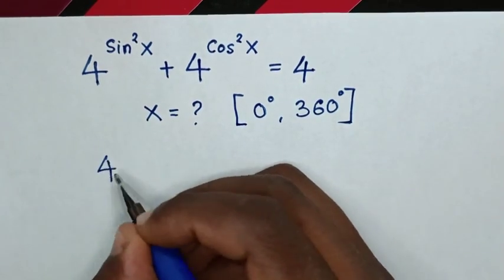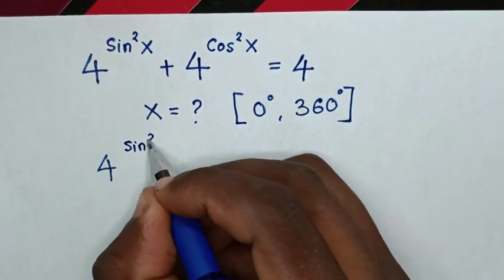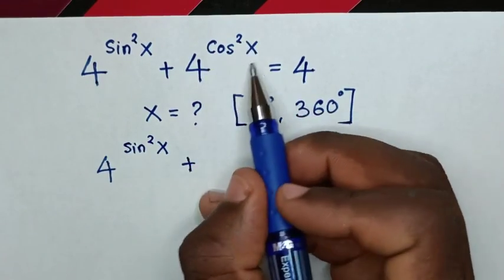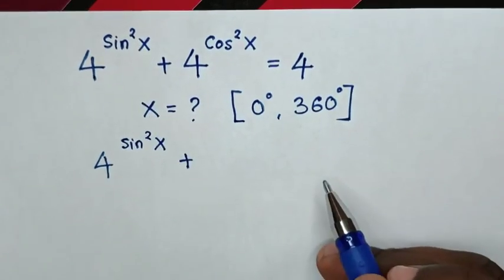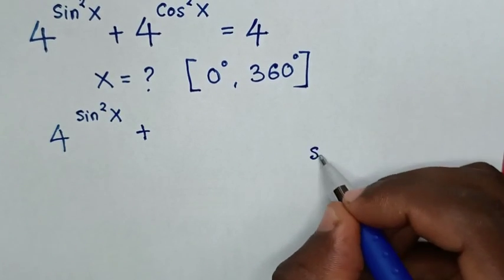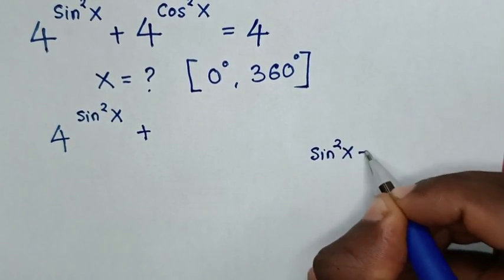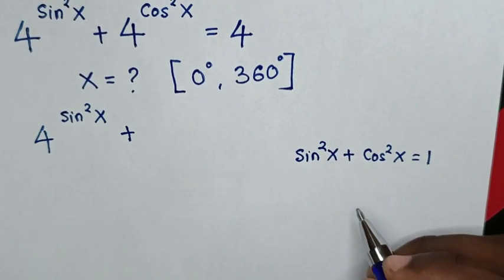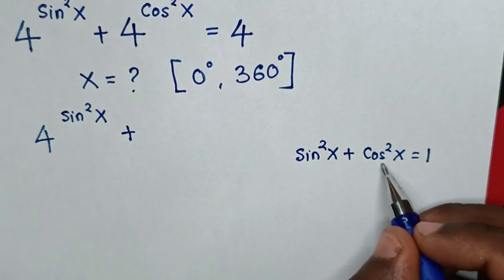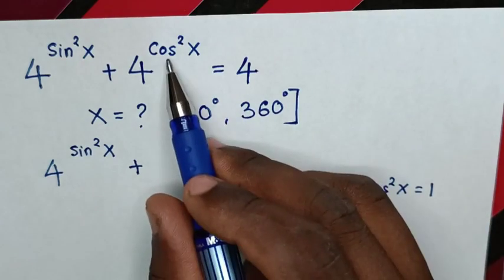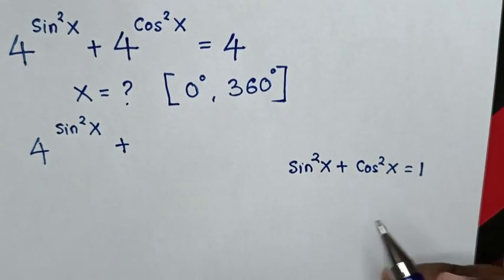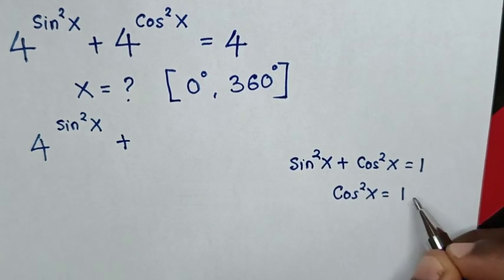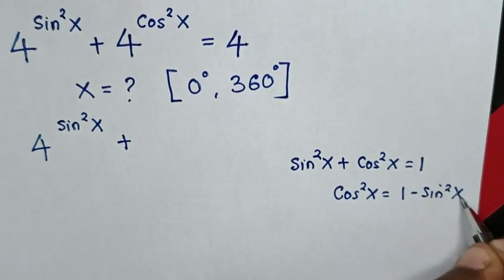From this equation, 4 power of sine squared x plus 4 power of cos squared x, we make sine squared x common. We apply the rule: sine squared x plus cos squared x is equal to 1, then we make cos squared x the subject. Taking cos squared x to the right side.